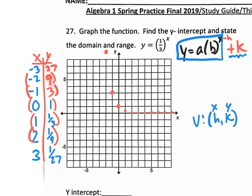The k value is either an up or down shift, and there is no h value — that's in Algebra 2. So right here, there is no h or k, so that's it — we're done. That's our graph; all we need to do is connect the dots. With the multiple choice, you're going to see some that from left to right go up — you could eliminate those because this is a one-third base, which means it's going to decrease.